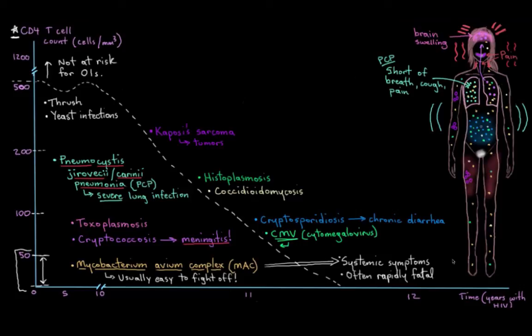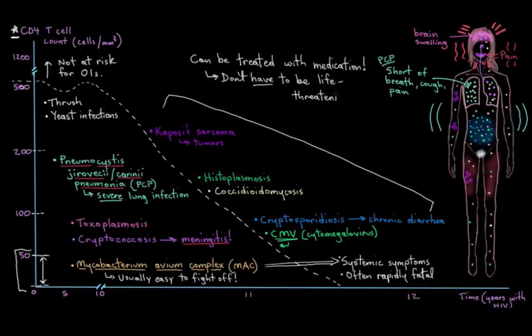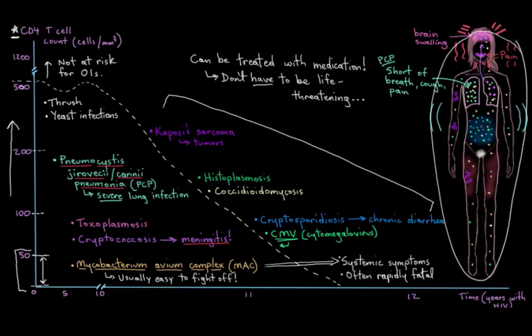Now, everything I've talked about, all of these AIDS-defining opportunistic infections, they can be treated with the right medications. So, with access to treatment, they don't have to be life-threatening. You just have to get medical help right away. And then once they're treated, the focus would then be on raising your CD4 cell count with ARV treatment, like HAART, so that hopefully your immune system gets stronger and none of these develop again. We'll see you next time.